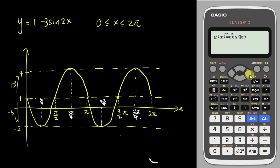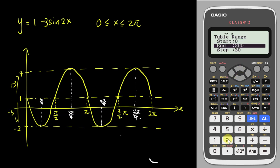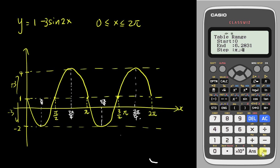I delete the cosine equation since I don't need it, then press enter again. I set the range from 0 to 2pi. Based on my graph, I want each step to be pi over 4. I tell the calculator the step is pi over 4. Note that this calculator only gives answers in decimal, so pi over 4 is about 0.785, and 2pi is about 6.28.